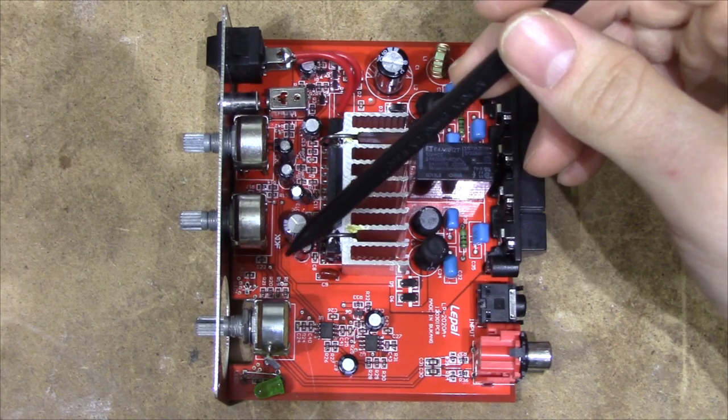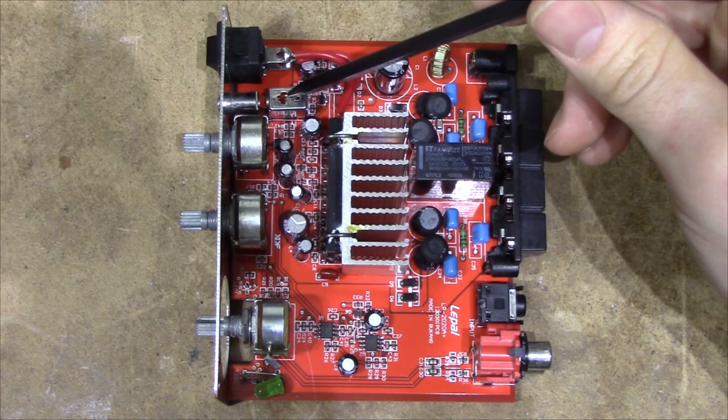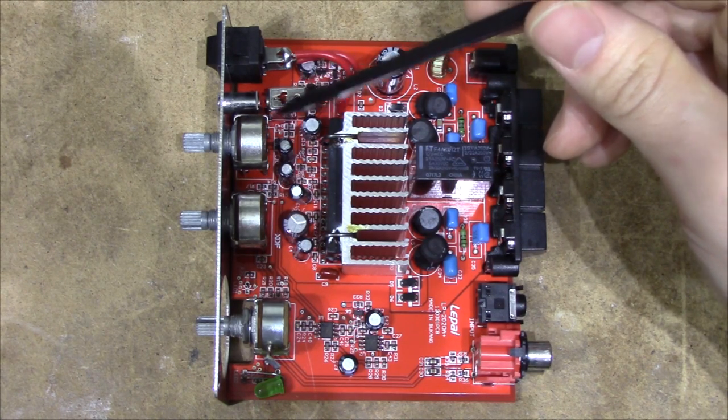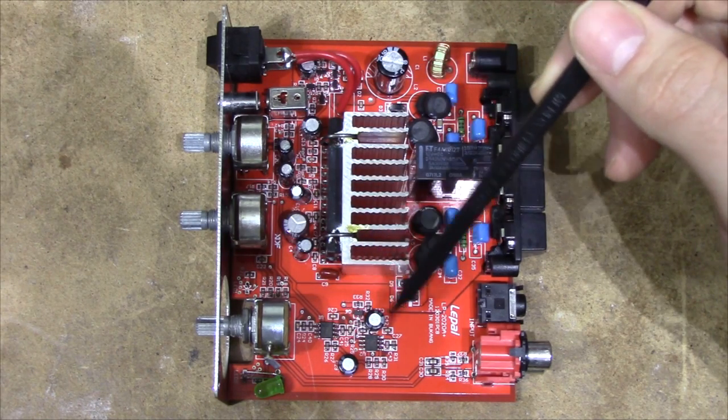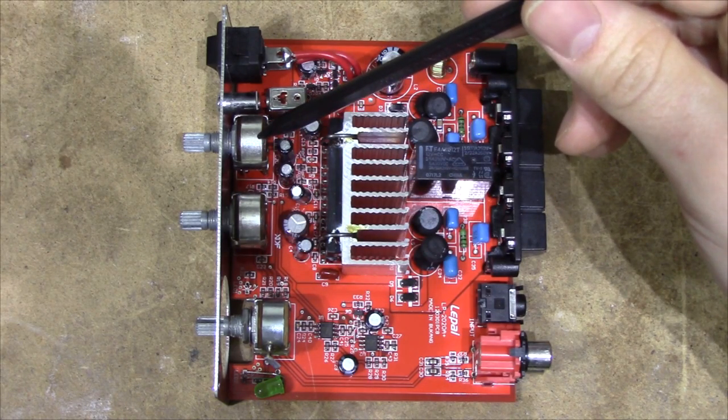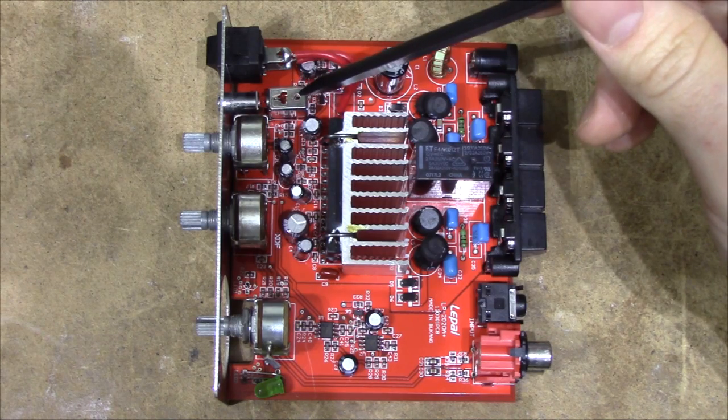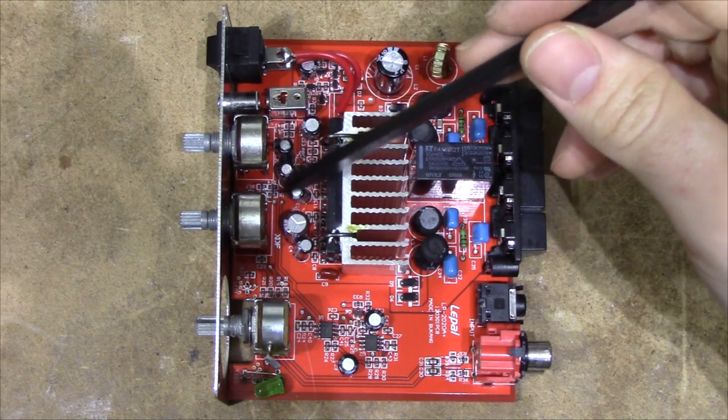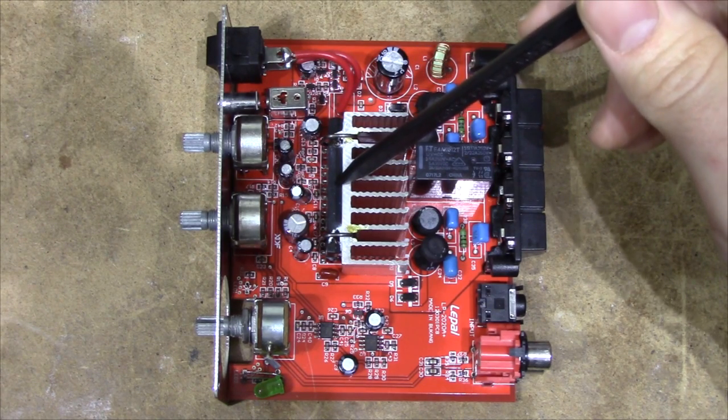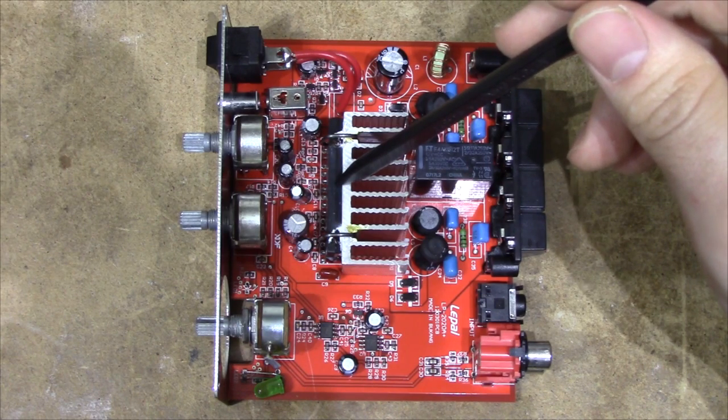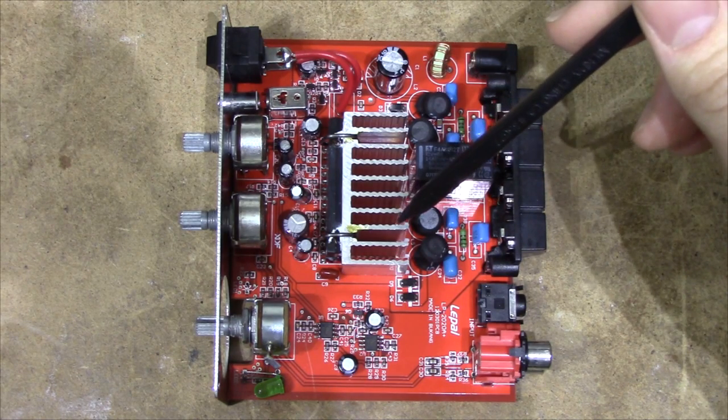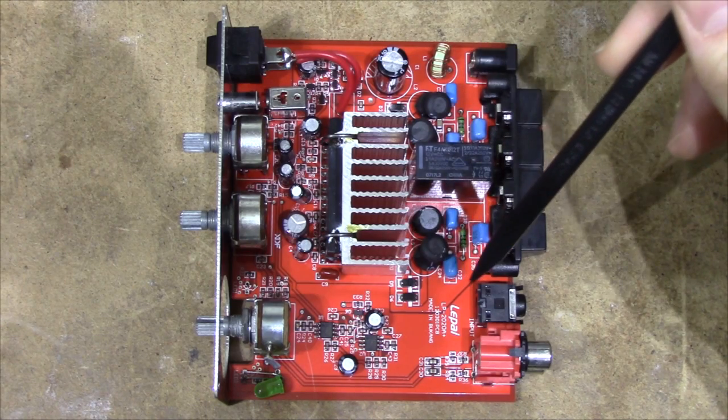After that, the signal moves on to this switch, which enables or disables the tone controls. If the tone controls are enabled, the signal goes back to this section here, which is just a tone amp controlled by the treble and bass controls. If the tone controls are disabled, the signal simply travels to these two input capacitors and straight into the TA-2020 amplifier chip.